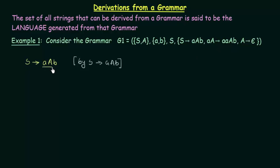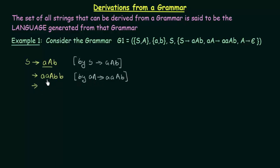So this AA can be expanded and written as AAAB, giving us AAAB followed by the remaining B. This is by the production rule AA gives AAAB. Now let us further expand this. From here again by the same production rule, I can take this AA and expand it: AA becomes AAAB, so we get AAABBB — AAAB followed by the two B's. This is again by the production rule AA gives AAAB.